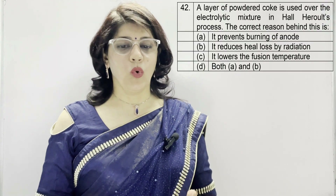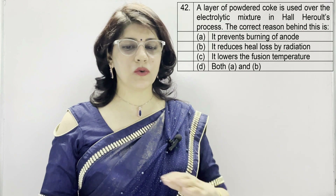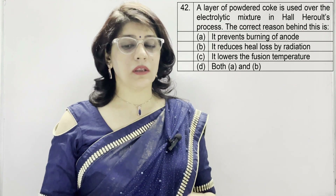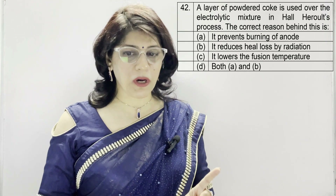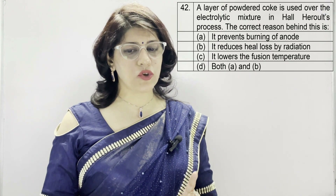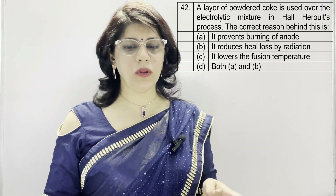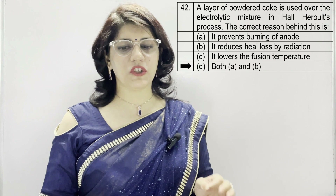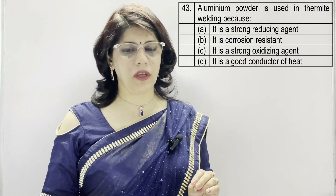In question number 42: a layer of powdered coke is used over the electrolytic mixture in Hall-Heroult's process. The correct reason is — A: it prevents burning of the anode, B: it reduces heat loss by radiation, C: it lowers the fusion temperature, D: both A and B. The correct option is D — both A and B.